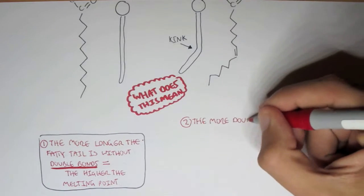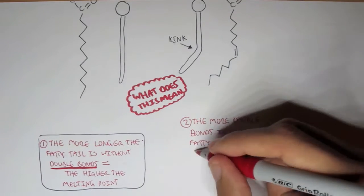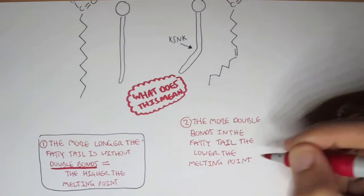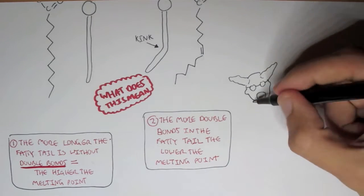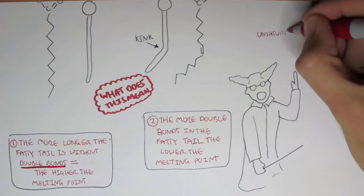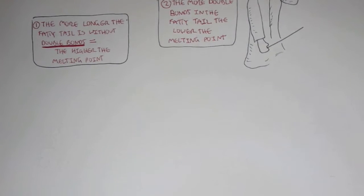Number two, however, the more double bonds in the fatty acid tail, the lower the melting point will be. So if you think about it, it means that the unsaturated fatty acid tail can be degraded quicker. Sometimes scientists or people think that unsaturated fat is better, and you can be the judge of that.